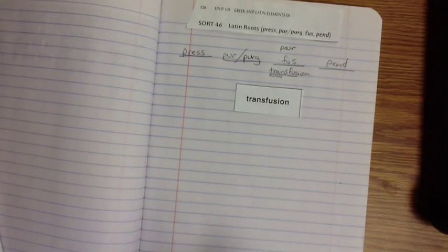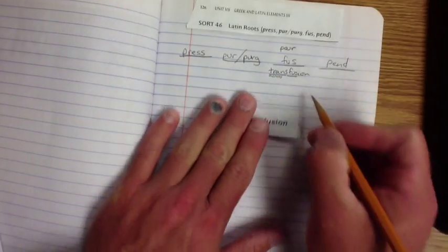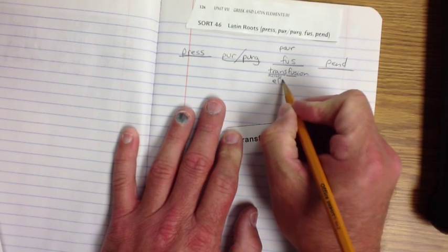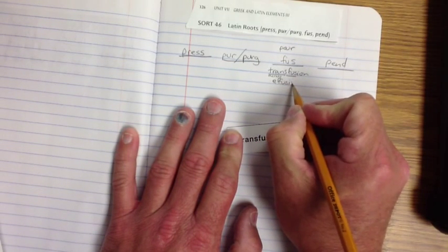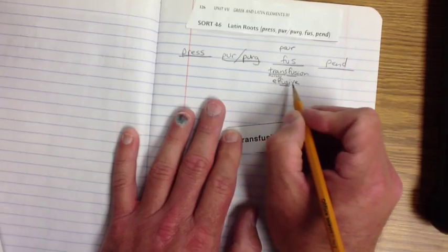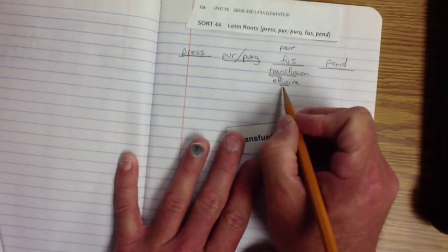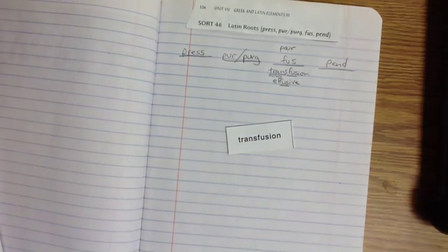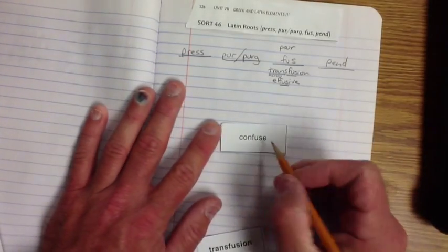So when we get a transfusion, we're pouring something across into something else. That's kind of cool. So we're going to do another word that we don't actually have. Because you know I love doing that. Effusive. E-F-F-U-S-I-V-E. Effusive. And this means to pour out. Out. To pour out. That's interesting. So when I have a transfusion, we're pouring across. If something is effusive, we're pouring it out. Interesting.